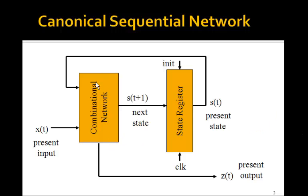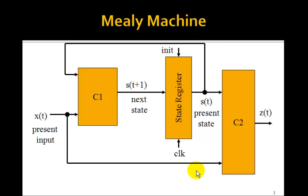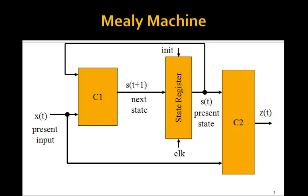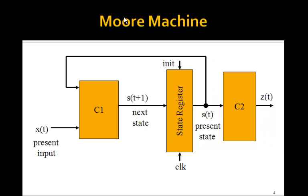Often it's convenient to divide this combinational network into two parts, C1 and C2. This is what's called a Mealy machine. The characteristic of a Mealy machine is that the output Z depends both on the present state and the present input. If the output Z depends only on the present state, we call that a Moore machine.